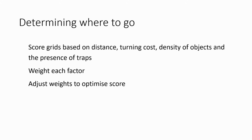To make the search more efficient, the time taken to turn towards and travel to a target grid should be minimised. Furthermore, some grids may be filled with more objects than others. So for the remaining grids that contain a colour of interest, they are ranked according to factors like distance from the current grid, angle needed to turn to face that grid, density of objects in the grid, and the presence of traps which will slow the robot down. A scoring system is set up to rank each grid, with different weights given to each factor. Weights vary across different maps, as they are optimised to get a higher score for a specific map.